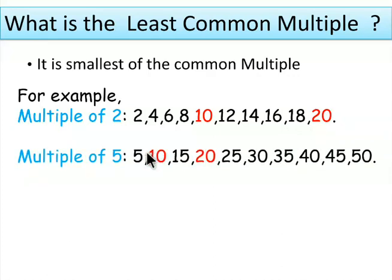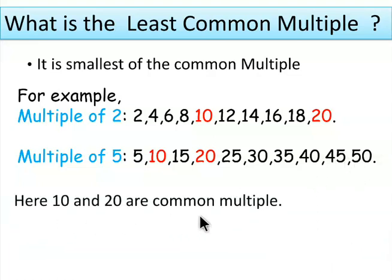Multiples of 5 are 5, 10, 15, 20, 25, 30, 35, 40, 45, and 50. Here, 10 and 20 are common multiples.